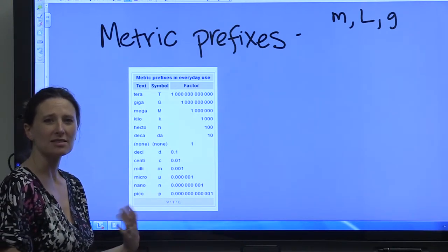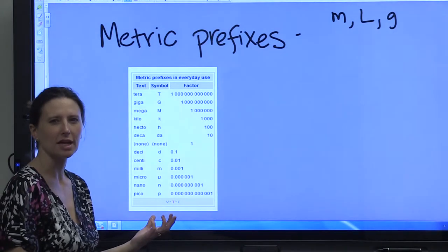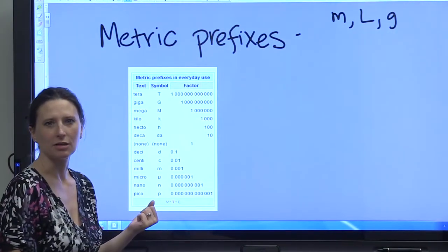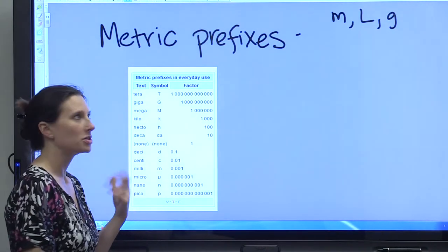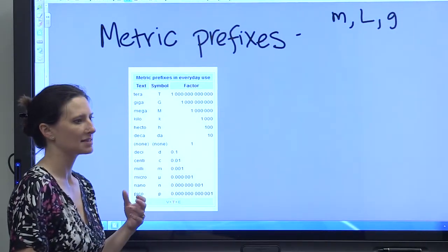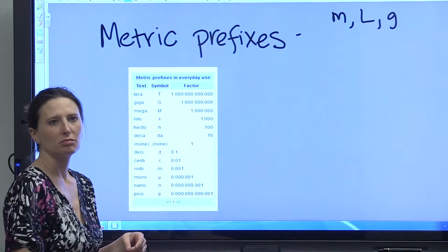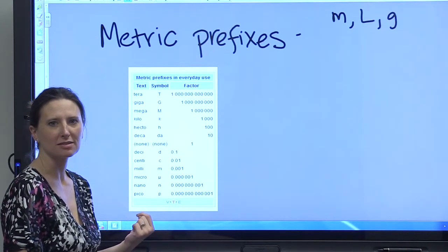Because sometimes you might look at something and the measurement's not going to make sense to you. If you're doing a conversion and it says that there are 0.5 centimeters in one meter, you're going to think, wait a minute, but centimeters are smaller than meters.